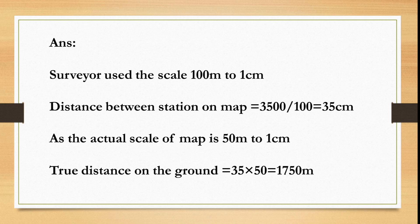As the actual scale of the map is 50m to 1cm, the true distance on the ground is equal to 35 times 50 is equal to 1750m. So option A is the correct answer.